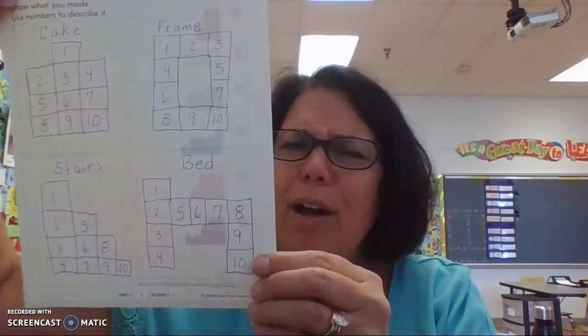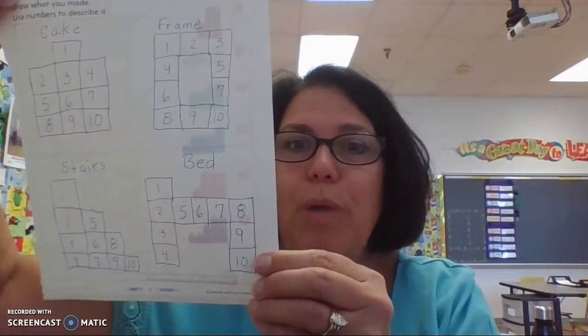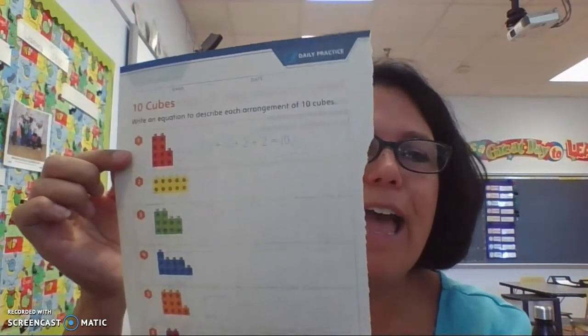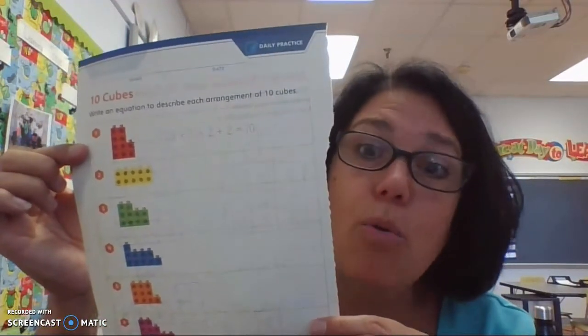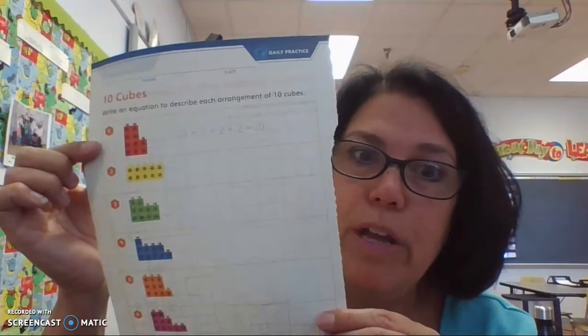All righty. So, now, we're going to take a look. I want you to turn in your math books to page 2. And if you turn to page 2, it's going to look like this. I want you to look at page 2. And I want you to look at how we can make equations that represent the number 10. So, we're going to use our 10 cubes and we're going to make equations.